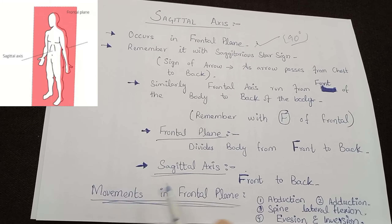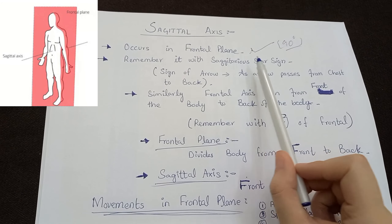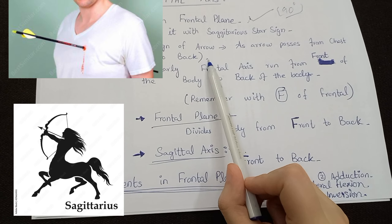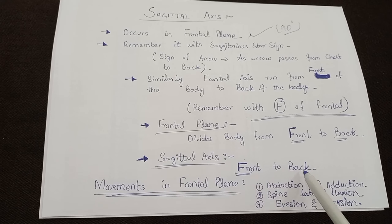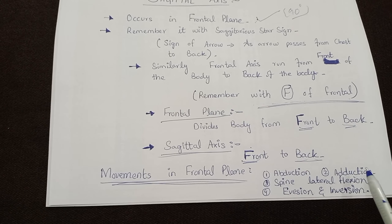The sagittal axis occurs in the frontal plane. Remember it with the Sagittarius star sign — the sign of the arrow — as an arrow passes from chest to back. Similarly, the frontal axis runs from the front of the body to the back of the body — remember with F of frontal. The frontal plane divides the body from front to back, and the sagittal axis will divide the body from front to back. The movements that take place in the frontal plane are: abduction, adduction, spinal lateral flexion, eversion, and inversion.